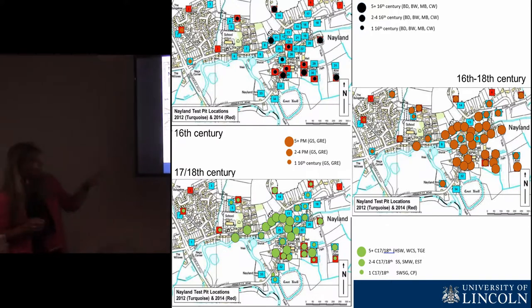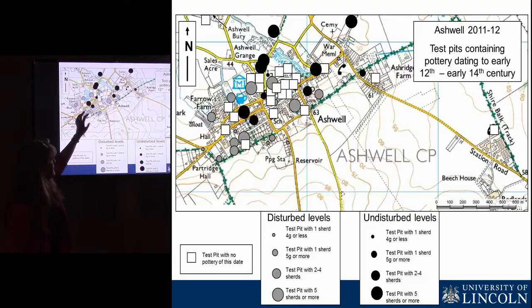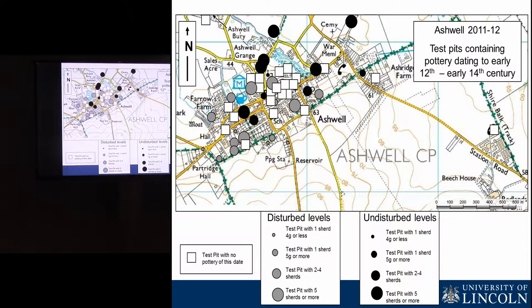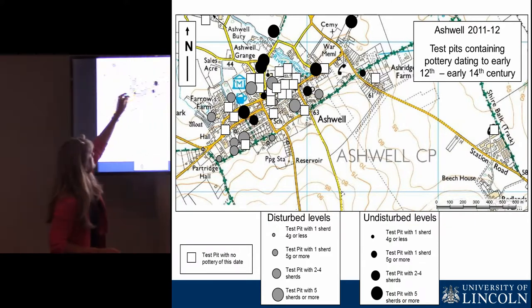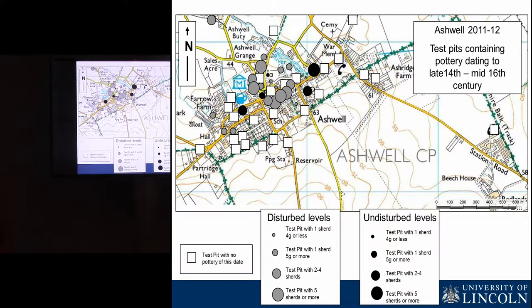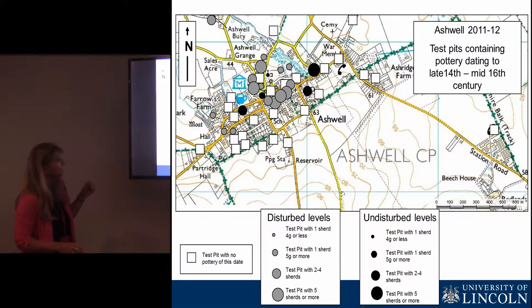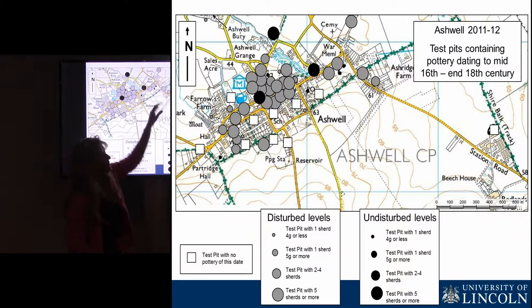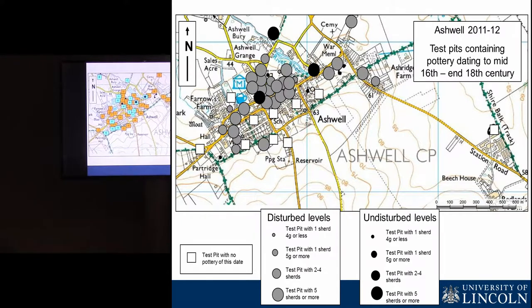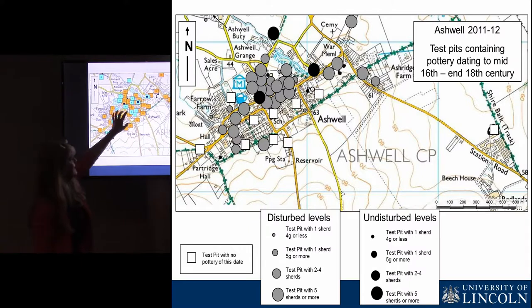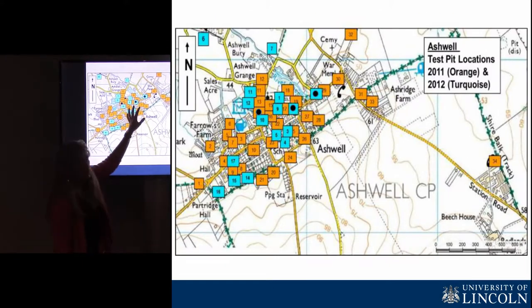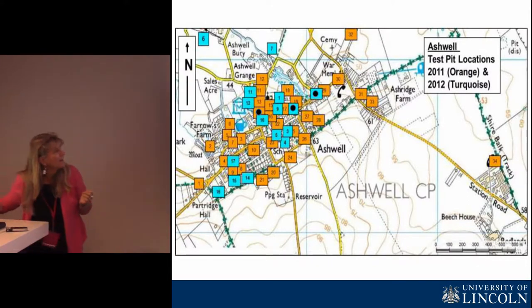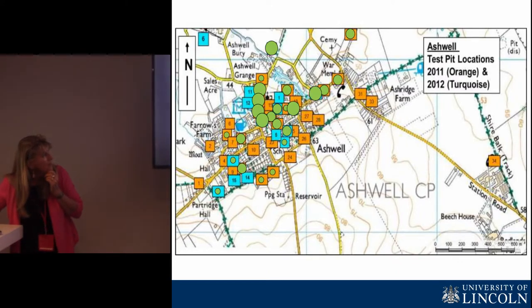Another example: Ashwell. The basic data shows a rather bitty, not very densely inhabited settlement before the Black Death. After the Black Death it seems to coalesce around the church. In the post-medieval period we see that coalescence become much denser and larger, with new areas of settlement expanding. When we look at what is actually 16th-century material, we only have three pits that produce definitely dateable 16th-century pottery, which contrasts with the 17th and 18th century.